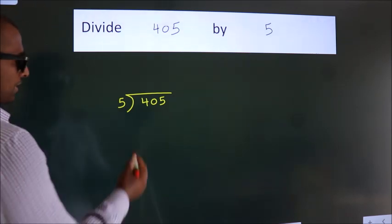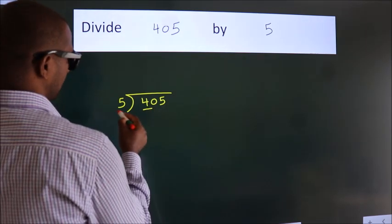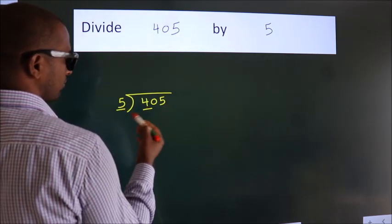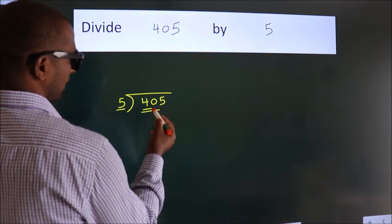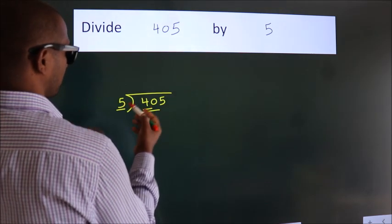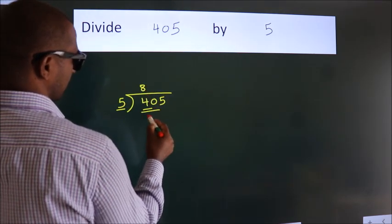Next, here we have 4. Here 5. 4 is smaller than 5, so we should take two numbers: 40. When do we get 40 in the 5 table? 5 times 8 is 40.